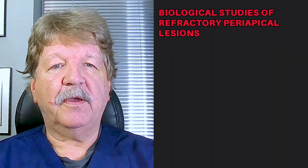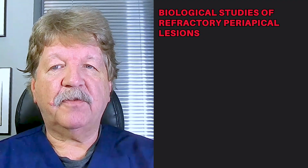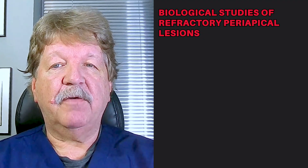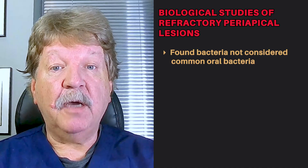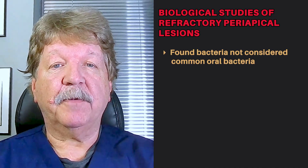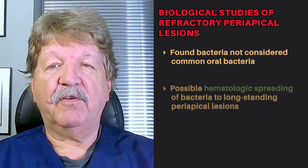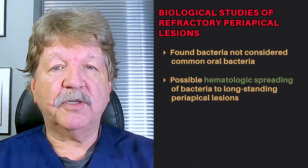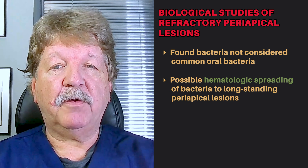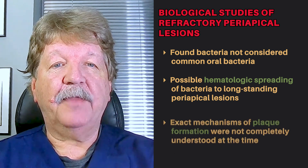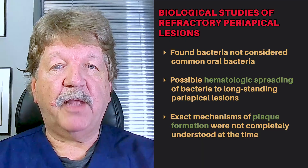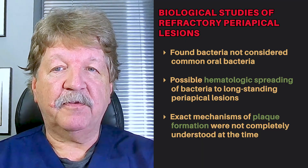What was even more interesting was that their biological studies of refractory periapical lesions found bacteria that were not considered common oral bacteria. Therefore, it was possible that hematologic spreading of bacteria to long-standing periapical lesions could occur. At the time, the exact mechanisms of how these plaques were formed were not completely understood.